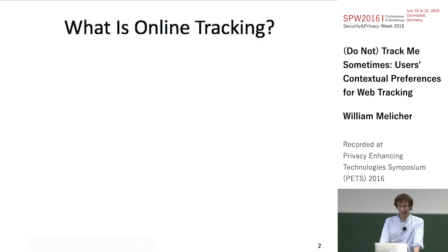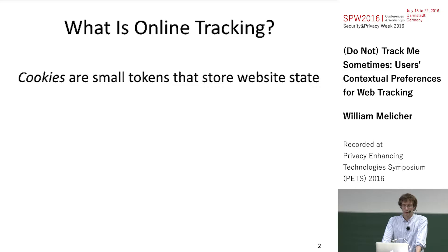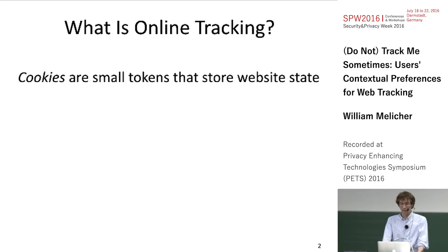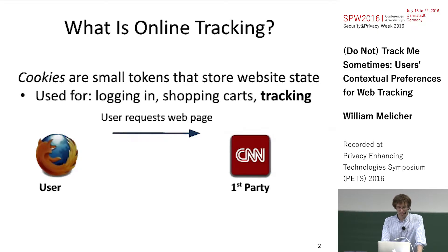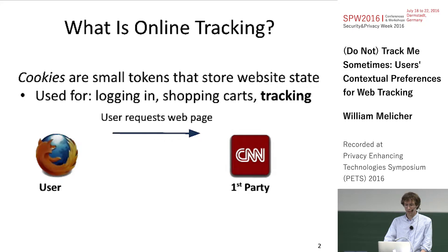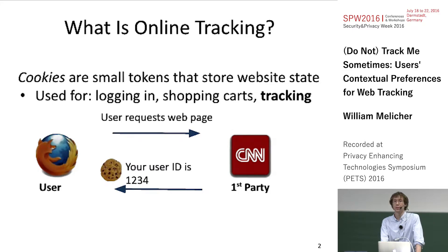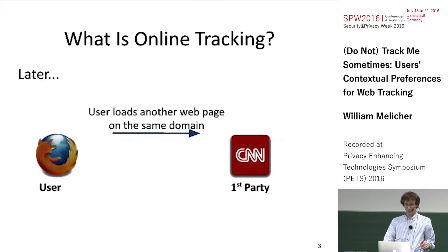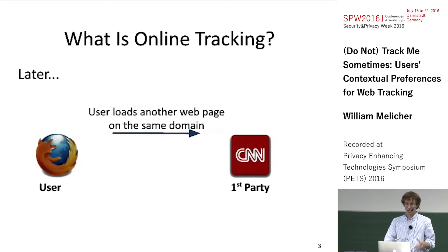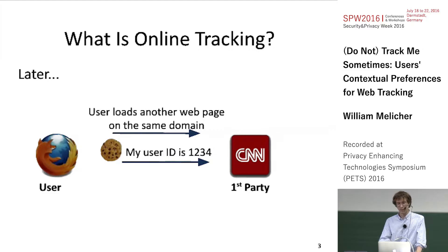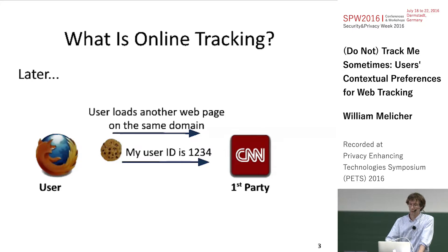I'm going to start by showing an example of online tracking with cookies. Cookies are small tokens that can uniquely identify a web browser across sessions and they're used for many things including tracking users. When a user loads a web page from a web server, like a news website, the server tells the web browser to remember a certain piece of information like your user ID. So later when you request a different page from the same domain, the web browser includes this piece of information with your user ID.